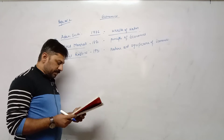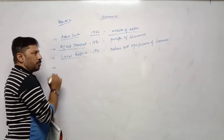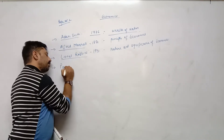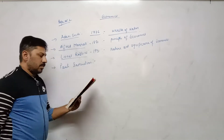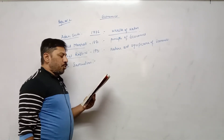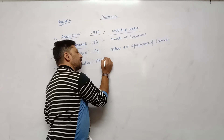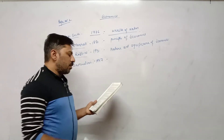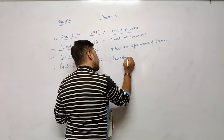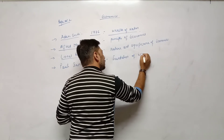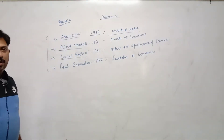Page number three: Definition of economics by Paul Samuelson. In his book Foundation of Economics, published in 1947, Paul Samuelson gave his definition. These points you have to learn for MCQ questions.